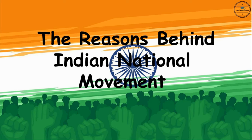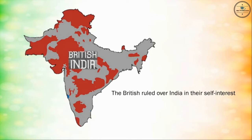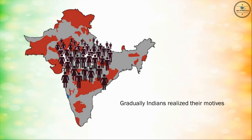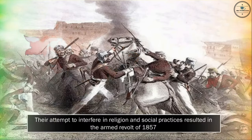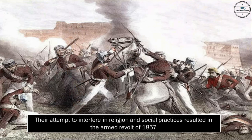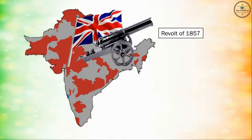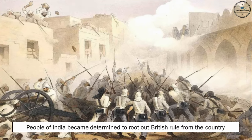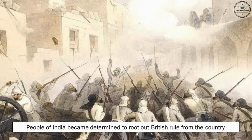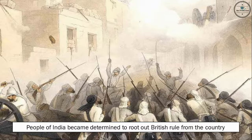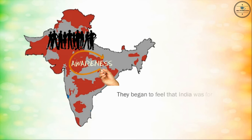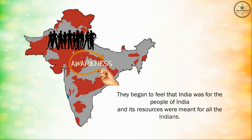What are the reasons behind the Indian national movement? The British ruled over India in their self-interest. Gradually, Indians realized their motives. Their attempt to interfere in religion and social practices resulted in the armed revolt of 1857. The British crushed the revolt, but after the revolt, people of India became determined to root out British rule. As awareness spread, they began to feel that India was for the people of India and its resources were meant for all the Indians.